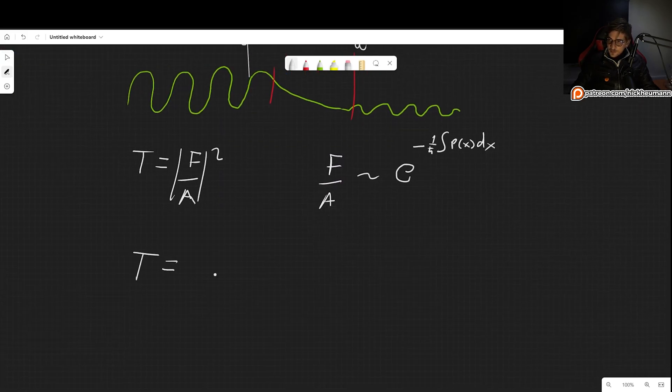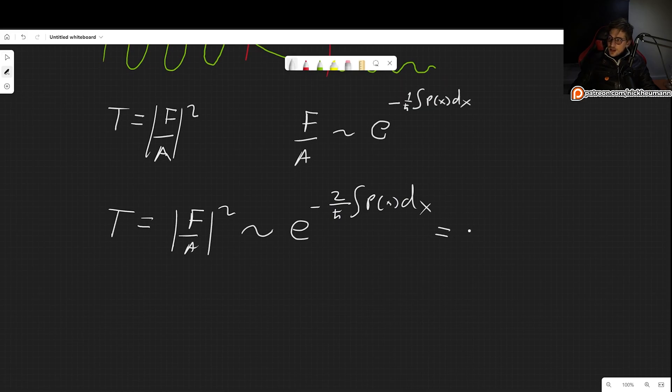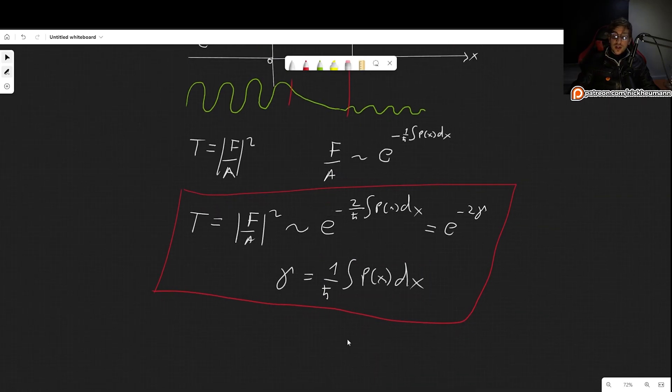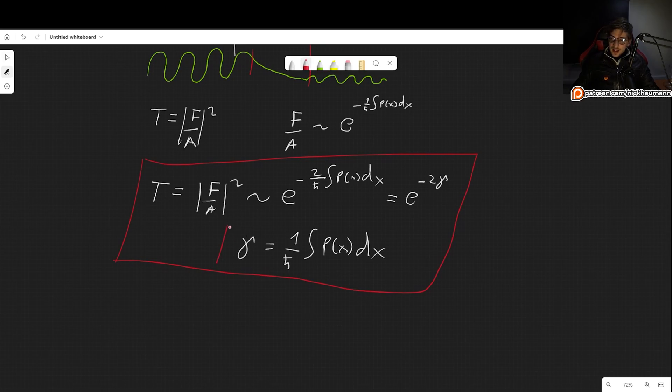So the transmission coefficient will be f over a squared, which will go as approximately, of course. Now, this will not be entirely correct. We are doing an approximation, and in future problems, we will see how big the error will be. But seeing how simple this approach is, we simply square this, we get e to the minus two over h bar integral of p of x, dx. And we can now call this e to the minus two gamma, where gamma is going to be one over h bar integral of p of x dx. And this is everything that we need in order to solve problems like this. So any problems, we're going to find transmission coefficient using the WKB approximation. All we need to do is find this integral. So we integrate over the momentum, and we plug it in there. And that is it. Finito. That's it.